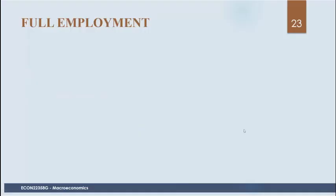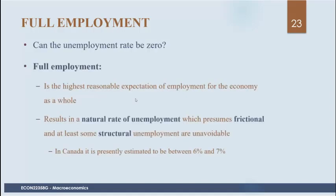Full employment is when cyclical unemployment is zero. The unemployment rate cannot equal zero because of structural and frictional unemployment — you can't completely eliminate those. Full employment is the highest reasonable expectation of employment for an economy as a whole. Things like the internet and online job searches have sped up the search process, but increases in employment insurance could slow it down.